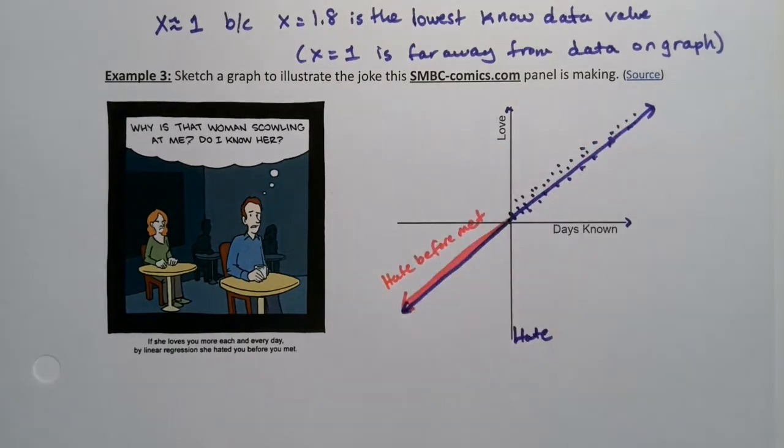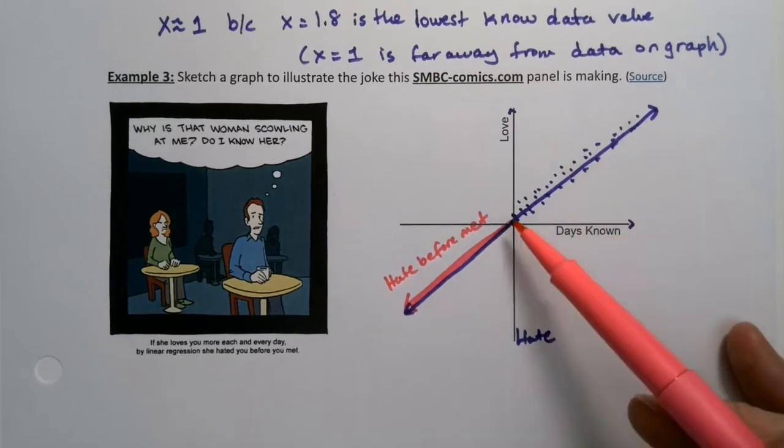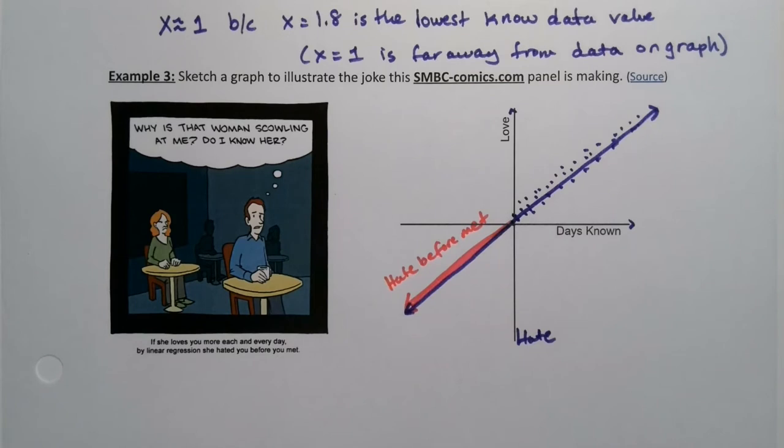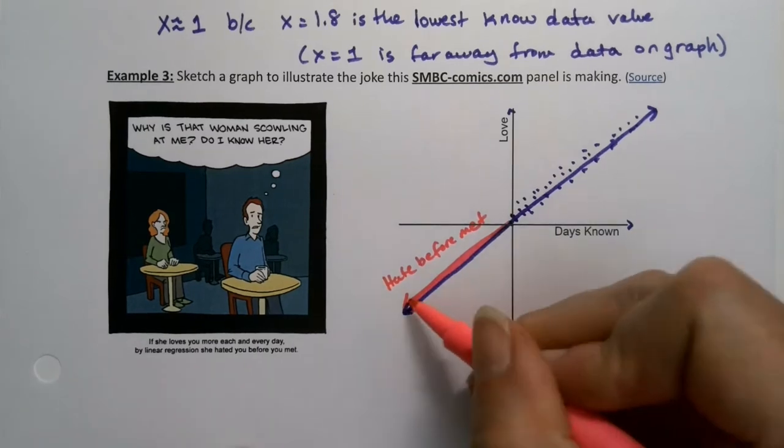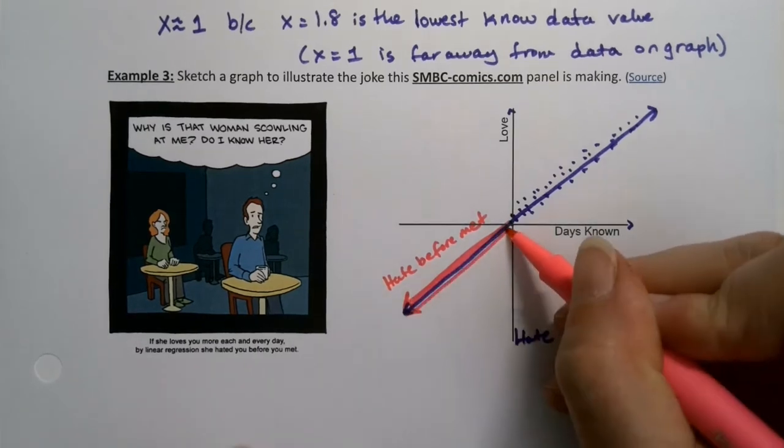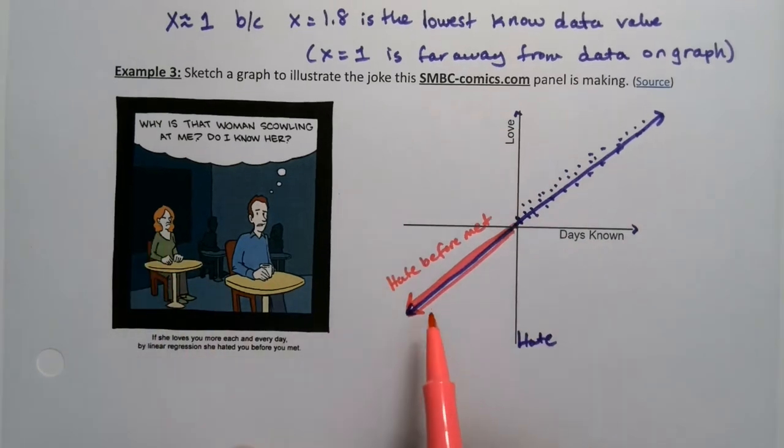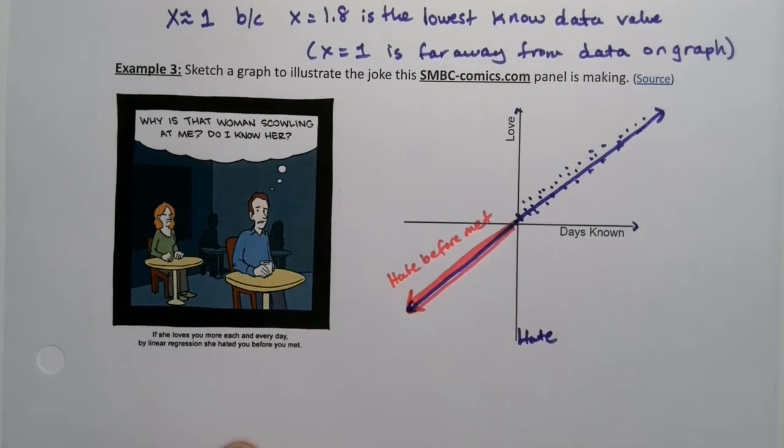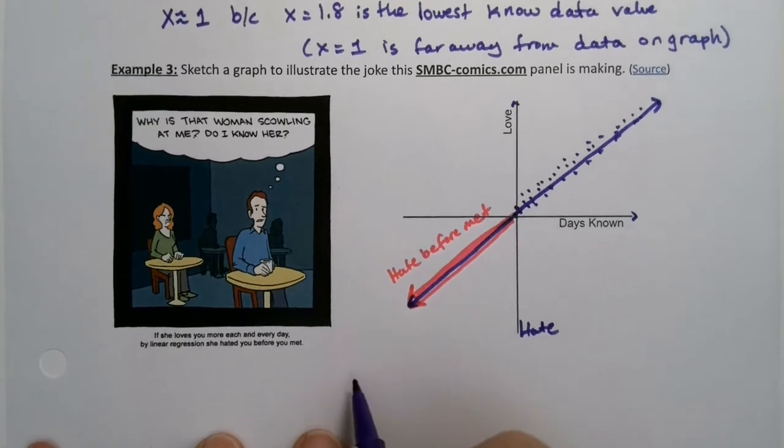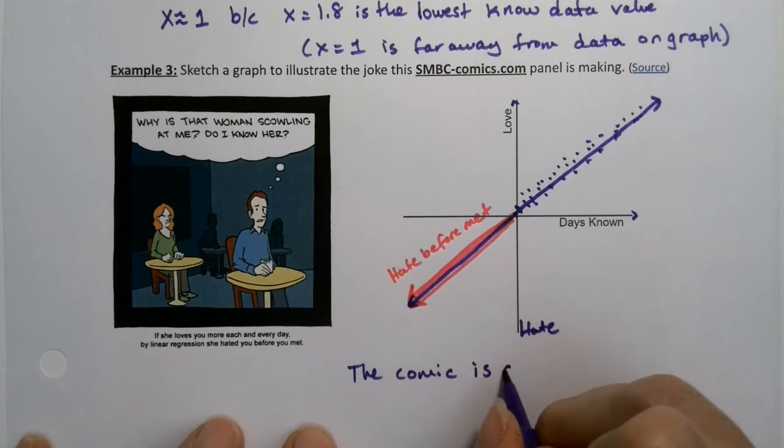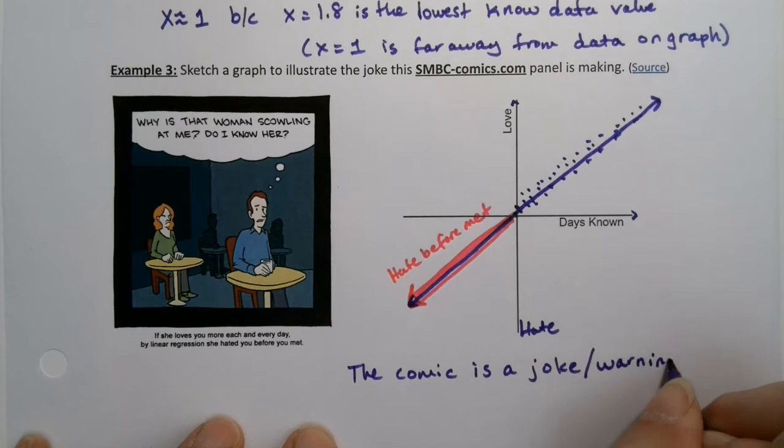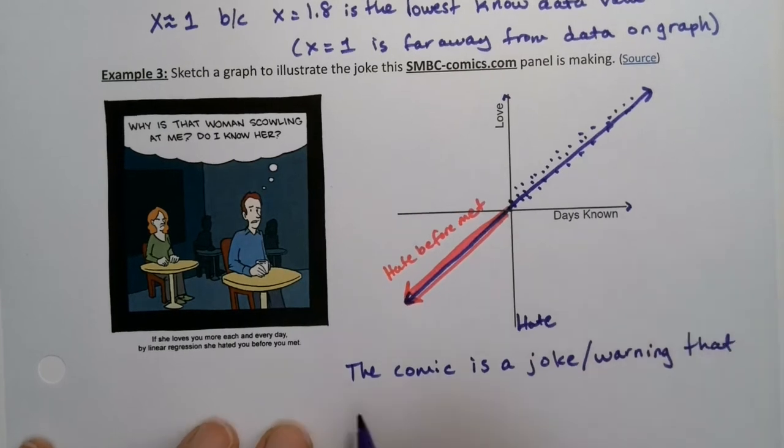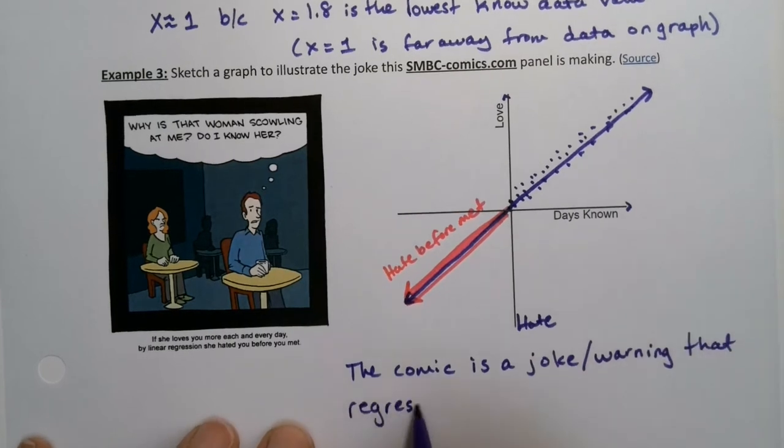So the comic is a joke about being outside the scope of the regression model and extrapolating too far. You can't extrapolate back into the past on this regression model. This regression model is not valid back before you actually met her, because otherwise people will be scowling at you wherever you happen to be. It's a joke, but it's also a warning.